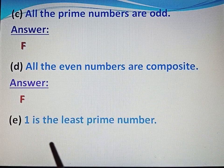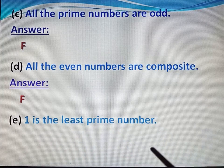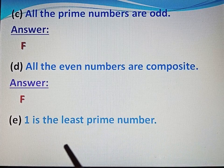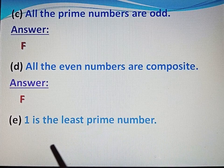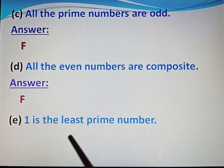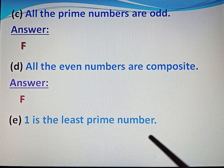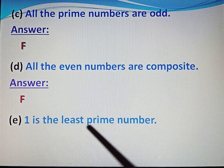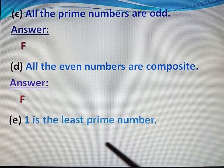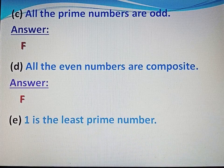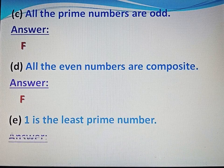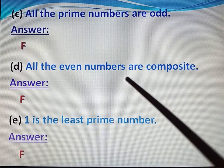Now part E. 1 is the least prime number. No, this statement is false. 1 is not a prime number, so it cannot be the least prime number. Write F for false.